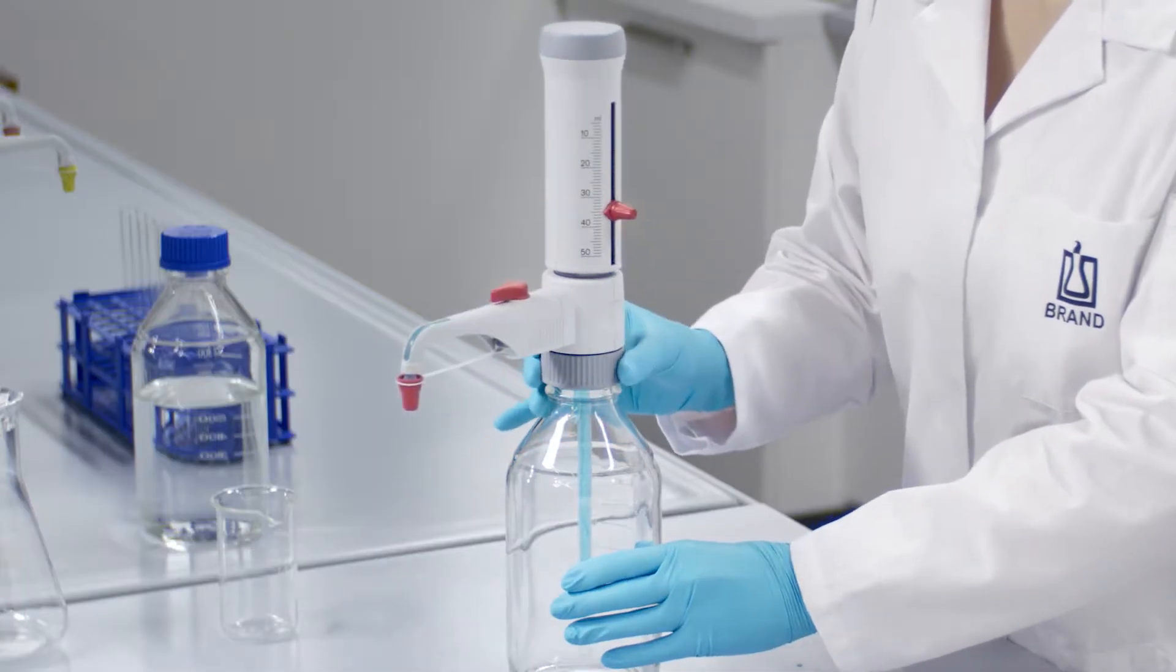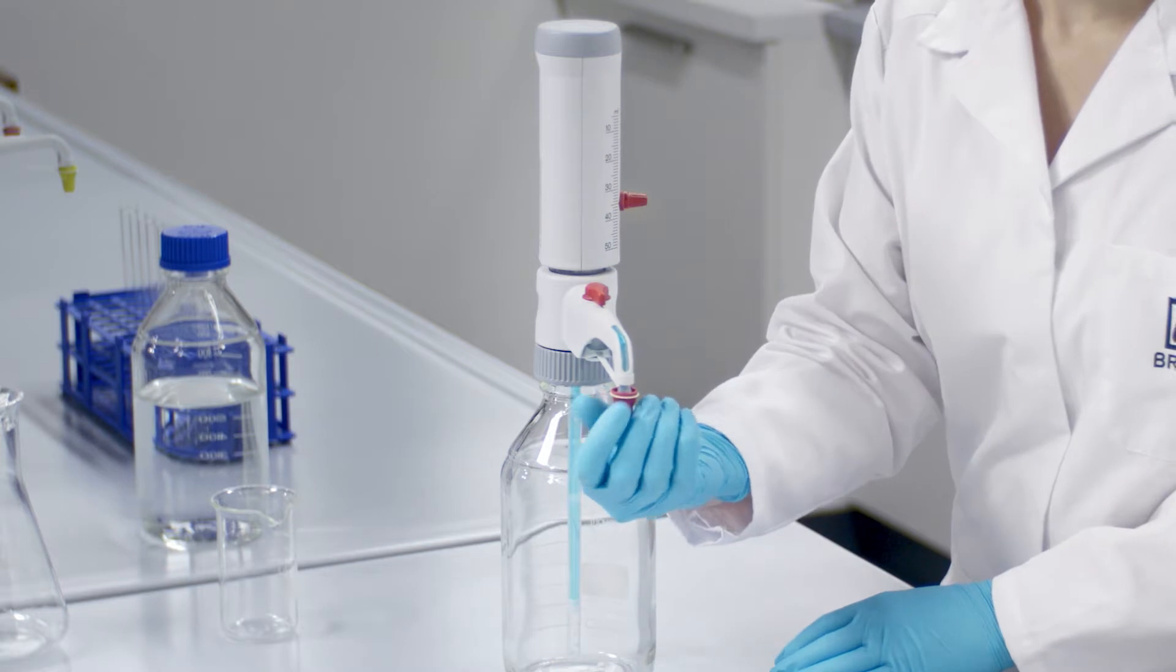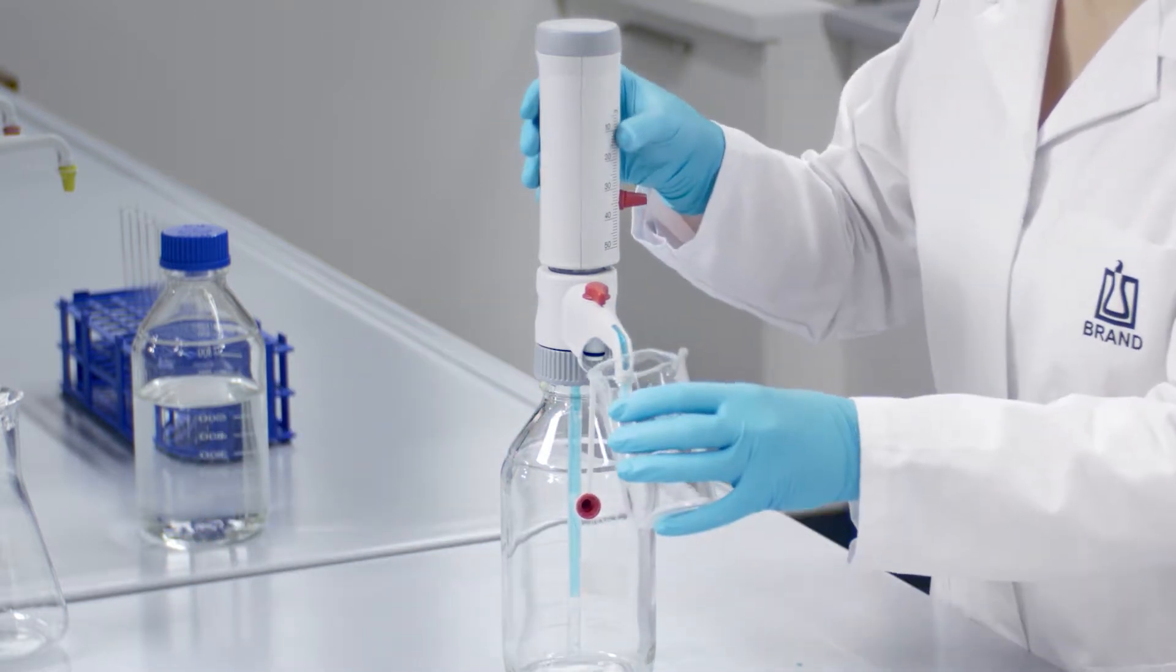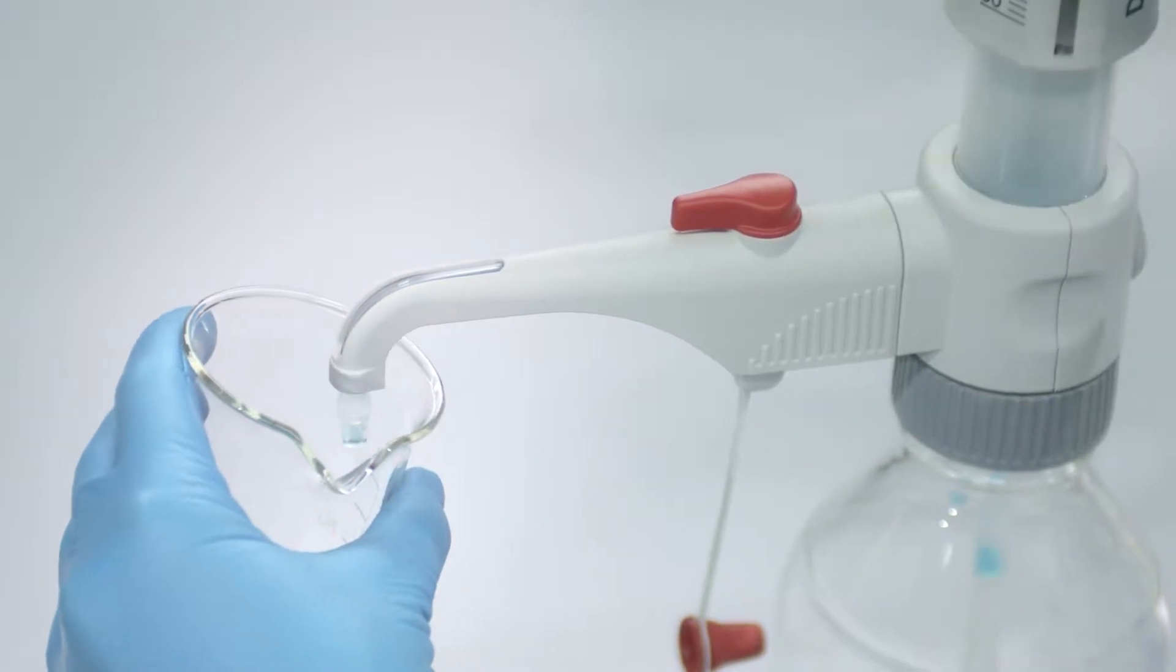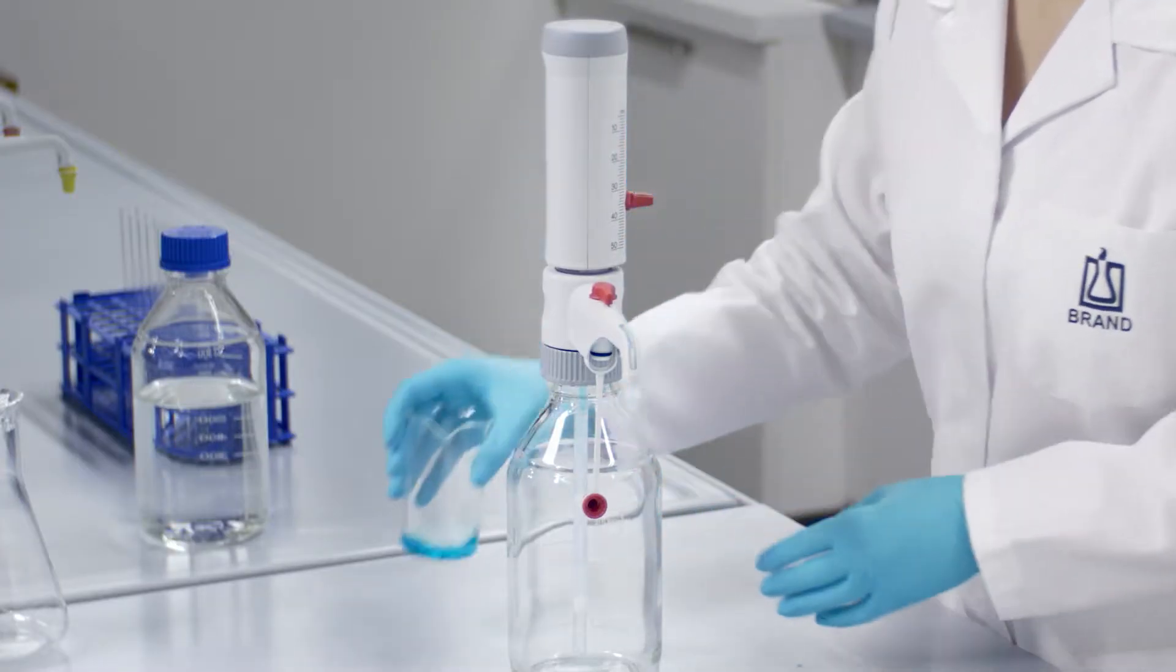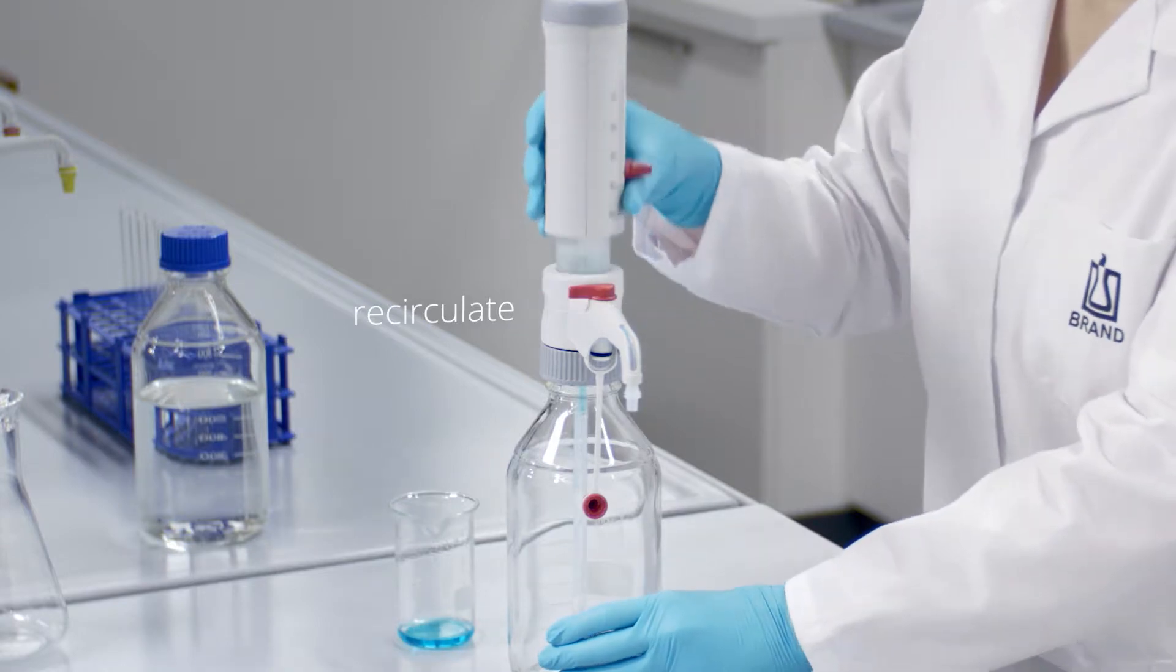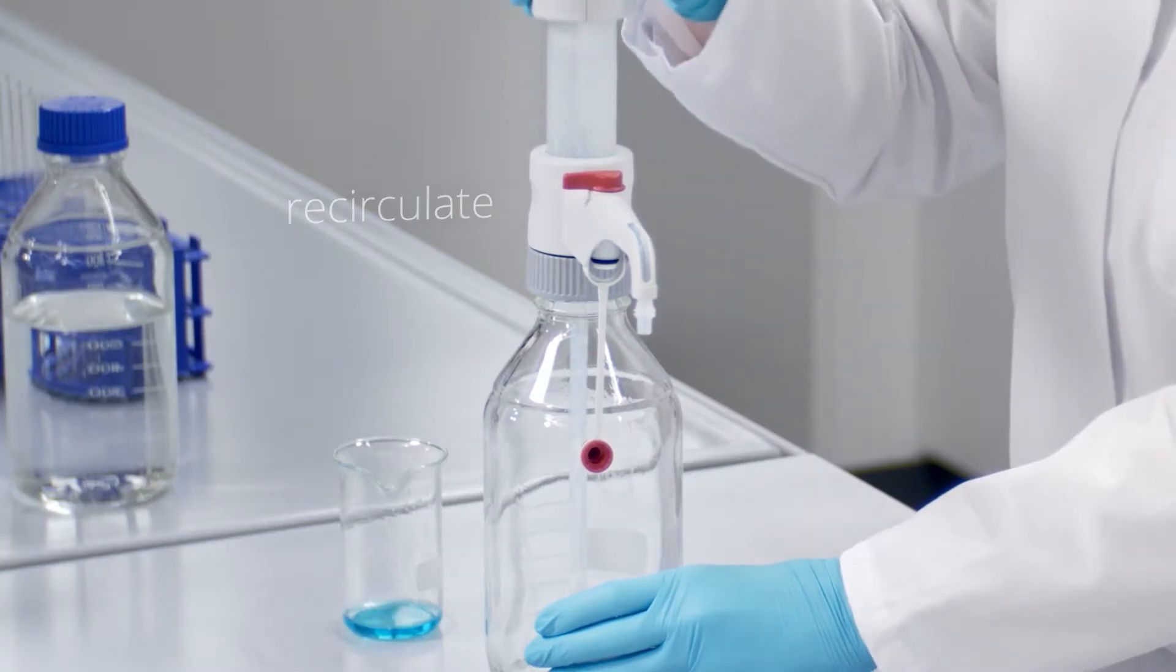Mount the instrument onto an empty bottle and empty it completely by repeated dispensing. If the instrument is equipped with a recirculation valve, it must be emptied in both the Dispense and Recirculate settings.